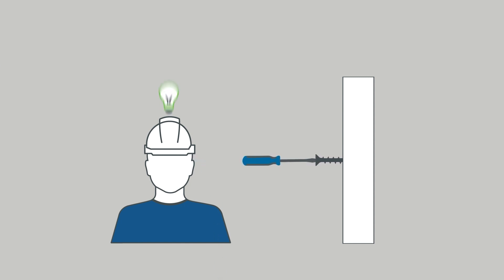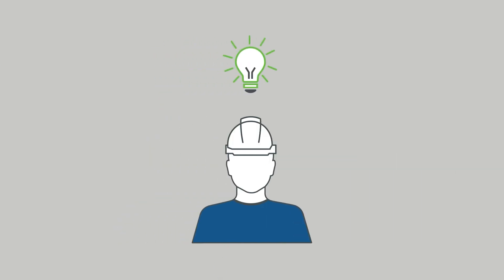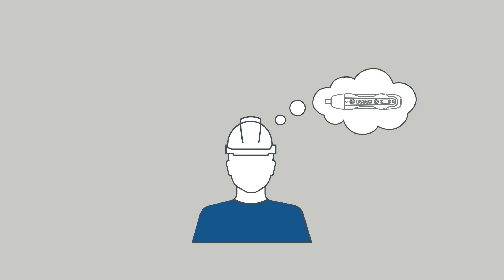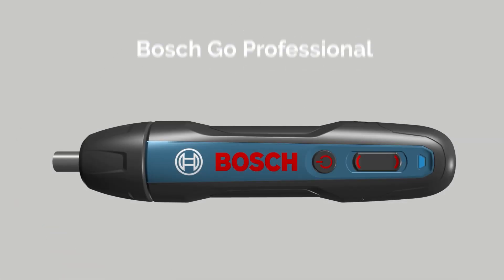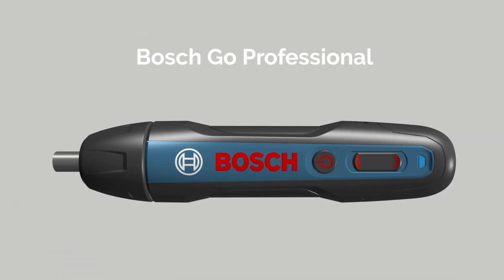It always starts with an idea. The focus of product development is the customer's need. In our example, this is a cordless screwdriver — the Bosch Go Professional.